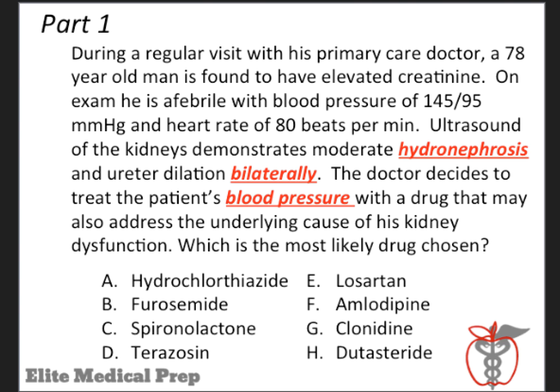Let's take a closer look at our question. We've highlighted a couple of key words in the vignette: hydronephrosis, bilaterally, and blood pressure. We know that the patient has hypertension with a blood pressure of 145 over 95. Scanning our answer choices, we can see that most of the drugs listed are commonly used antihypertensives, including diuretics and drugs of other mechanisms and classes.